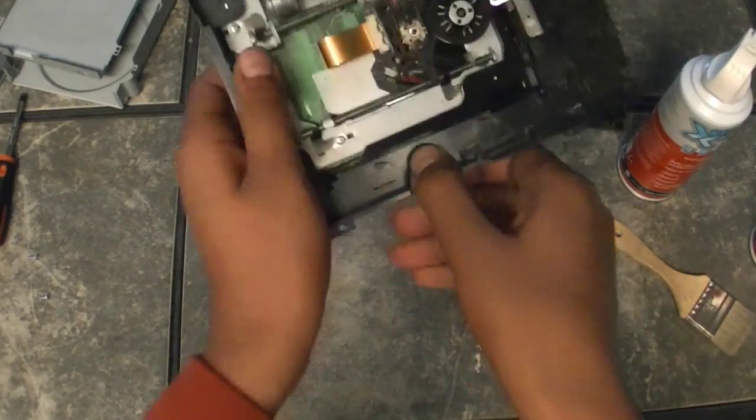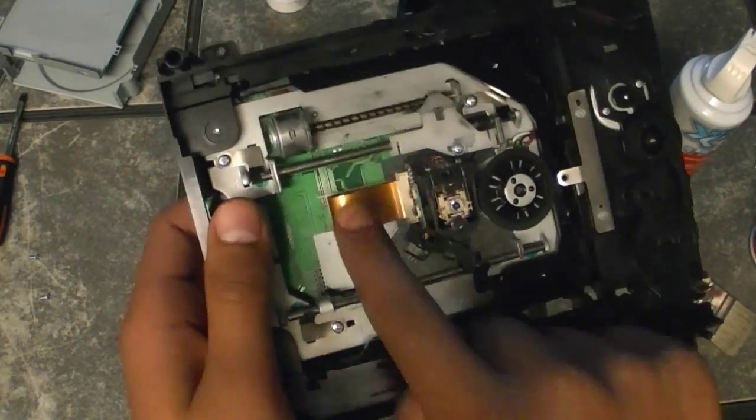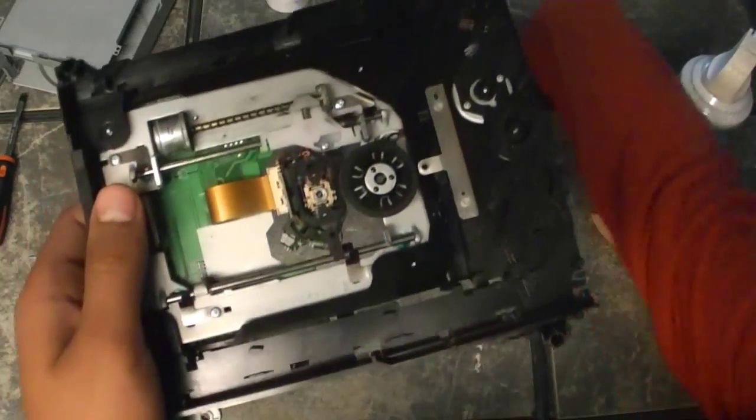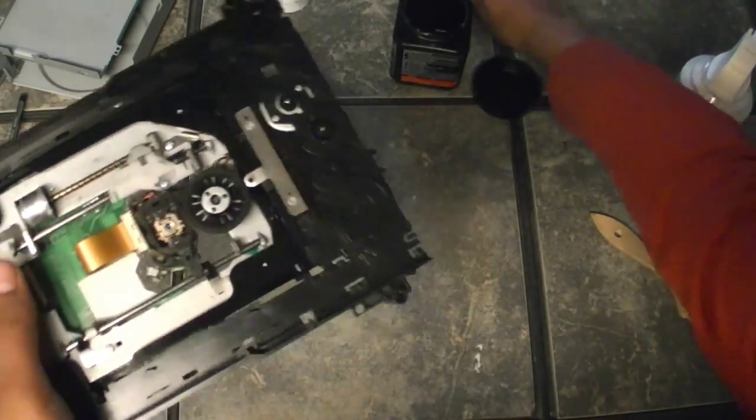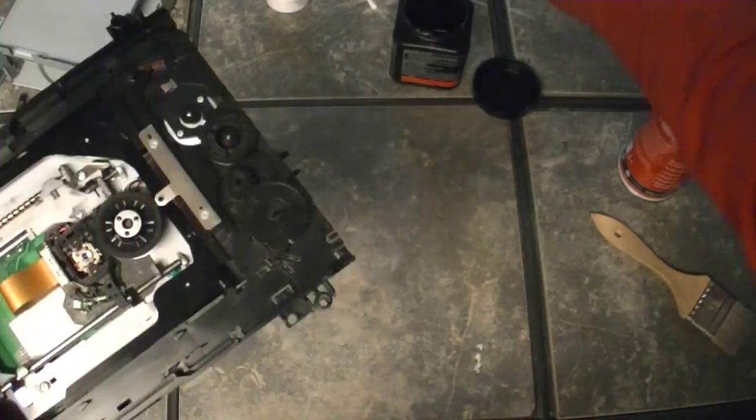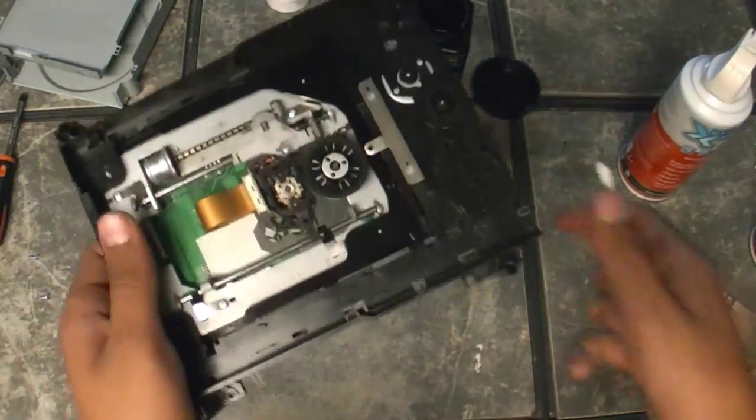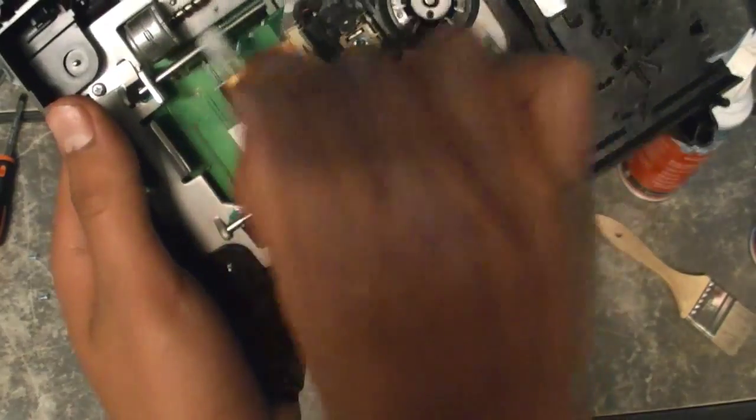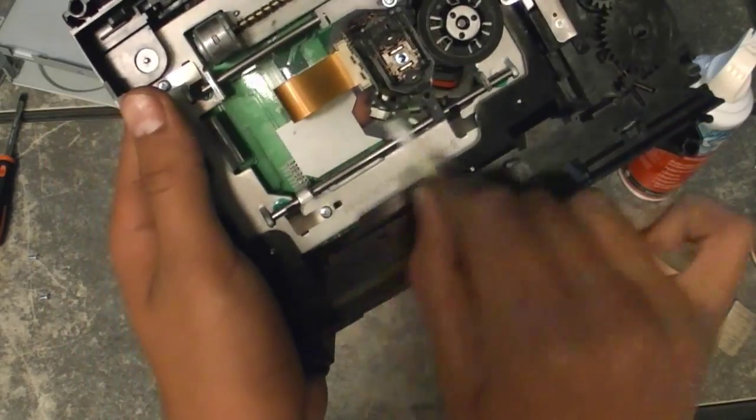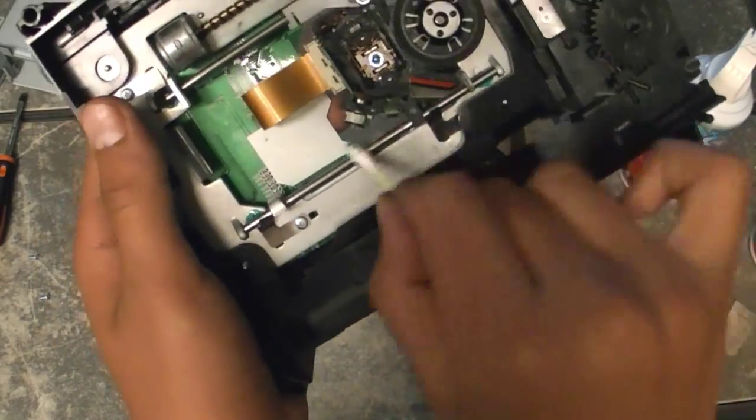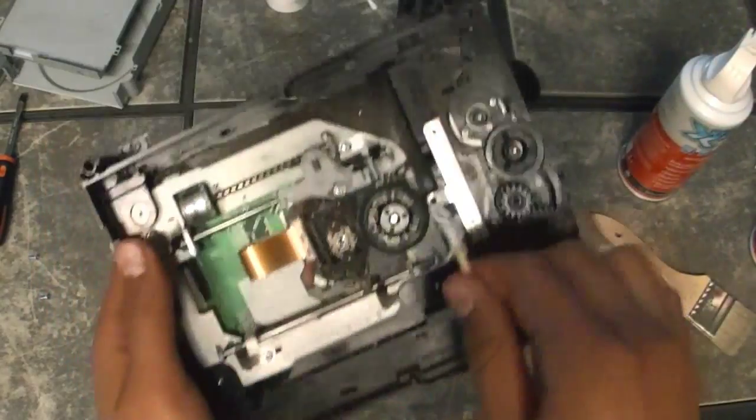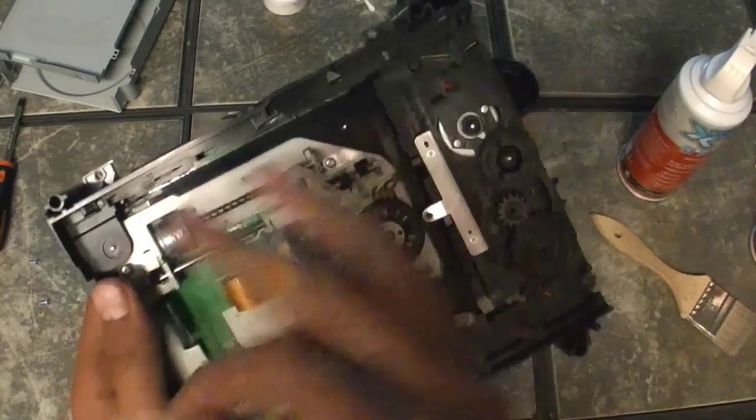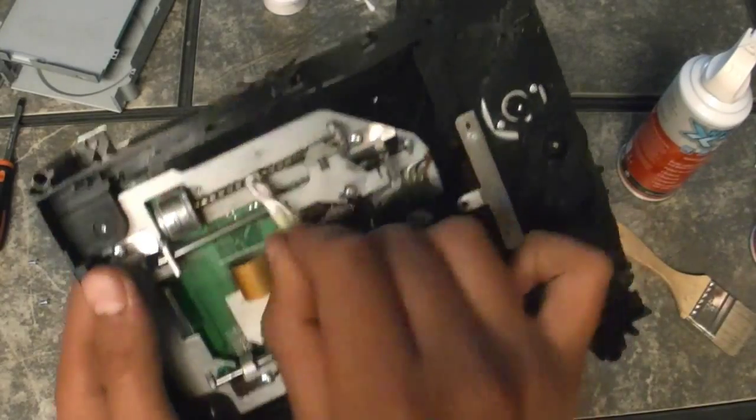Now what you want to do, if you can see there's two metal bars and then this gold bar. So what you want to do, you want to get your Q-tips and you want to clean those bars because there could be gunk or dirt, and that's what kind of slows it from, that's what kind of keeps it from, from the tray to be moved back and forth.